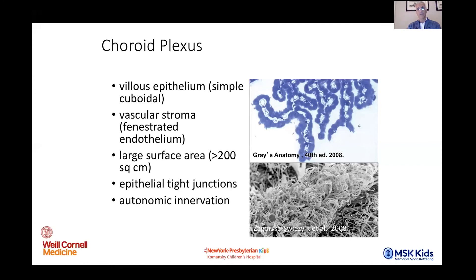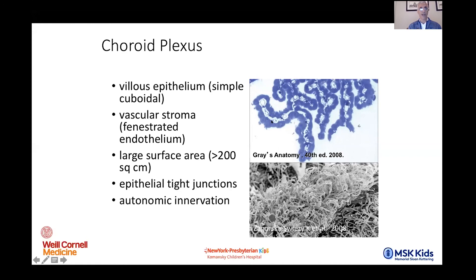The choroid plexus has a wonderful frothy, soft appearance that tends to float and ebb and flow in the CSF. On H&E stain, you get a great sense of the fragility of these structures — they are only one cell layer thick along the choroidal epithelium, with the capillary endothelium on the inside. It doesn't take much to damage it. Like the intestinal lumen if stretched out, the monolayer is huge relative to the ventricular compartment.